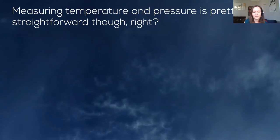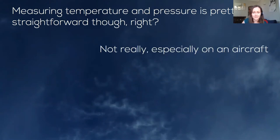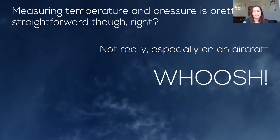But why am I talking about it? Measuring temperature and pressure is easy, right? It's a straightforward basic measurement — and it is on the ground, more or less, although measuring temperature on the ground is actually quite tricky to get absolutely right. But we're on an aeroplane and that's the problem. We are whooshing along at 200 miles an hour and that disturbs things, changes what you're trying to measure, and makes the measurement really quite difficult.